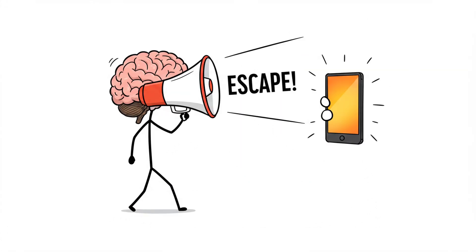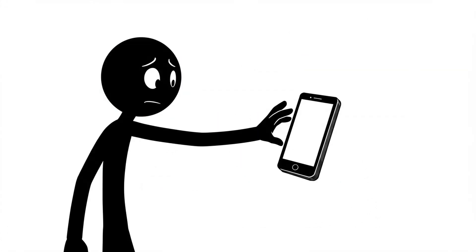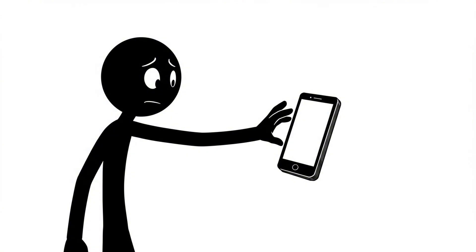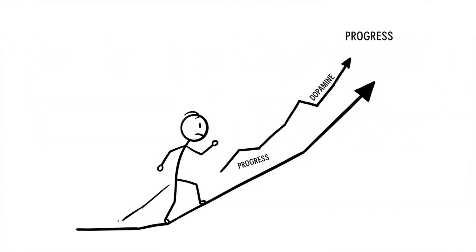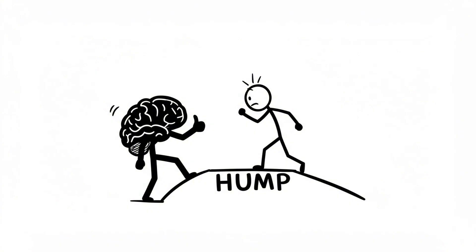Starting a tough project, dopamine drops. This drop creates what neuroscientist Andrew Huberman calls the dopamine trough, a low motivation valley right when you need focus the most. Your limbic system sees that drop and screams, escape, grab your phone, eat something, do anything easy.